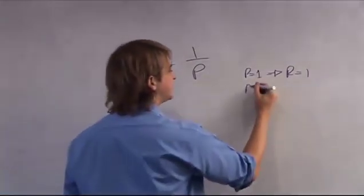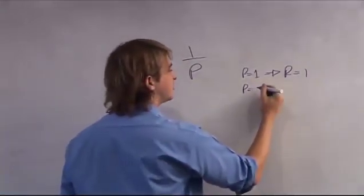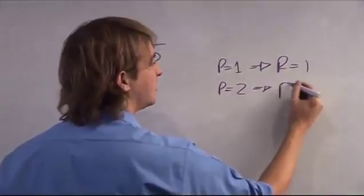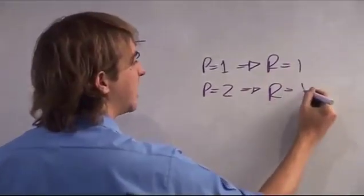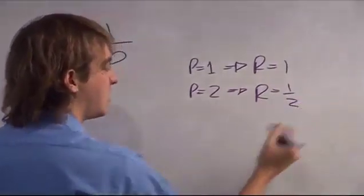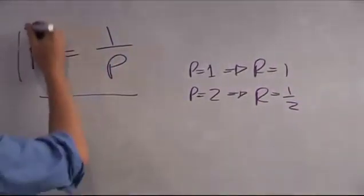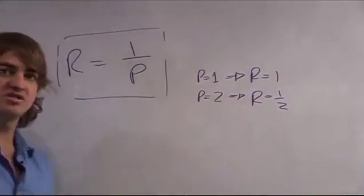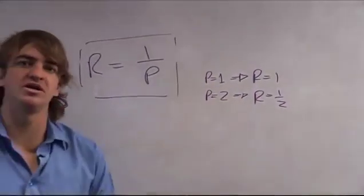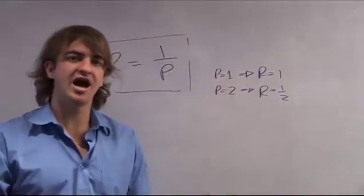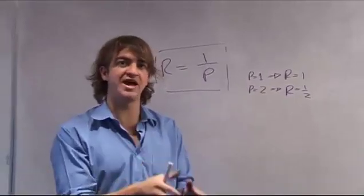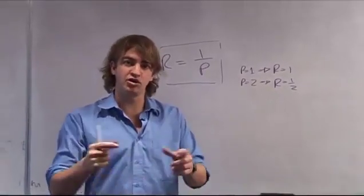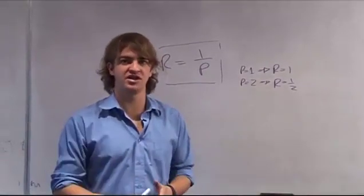However, if the price level then doubles, the purchasing power of your money is going to halve — it becomes one half. This is a simple equation you can use to check the purchasing power of your money: how much in terms of value of goods can you buy with the notes and currency that you have?